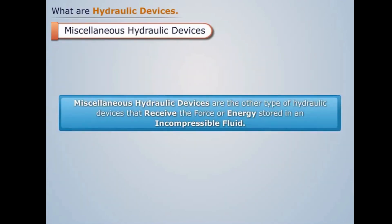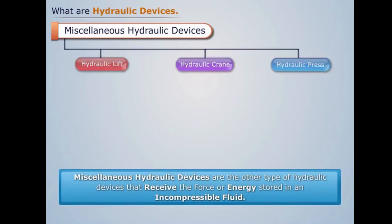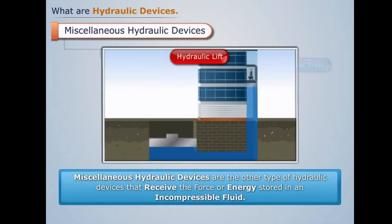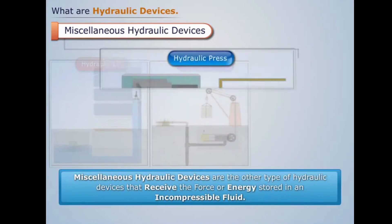Miscellaneous hydraulic devices are the other type of hydraulic devices that receive the force or energy stored in an incompressible fluid. The examples of miscellaneous hydraulic devices are hydraulic lift, hydraulic crane, and hydraulic press.